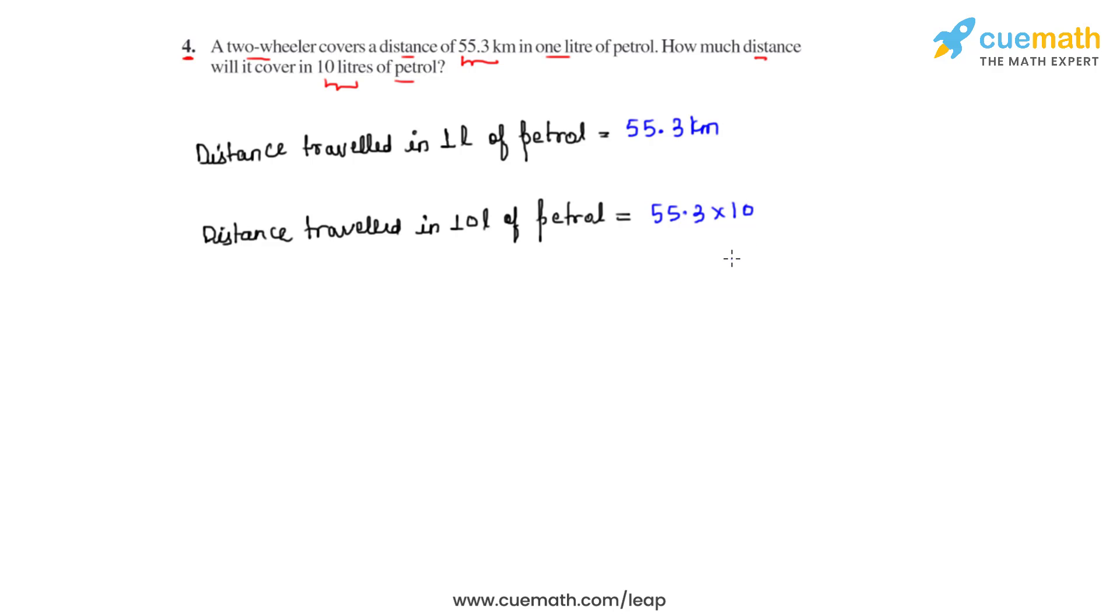Now we have two numbers wherein we have one number which is a decimal number and the other number is a power of 10. So the decimal will move towards right as many zeros as we have in the number which is a power of 10. So there is only one zero here, so the decimal will be moving one place towards right.